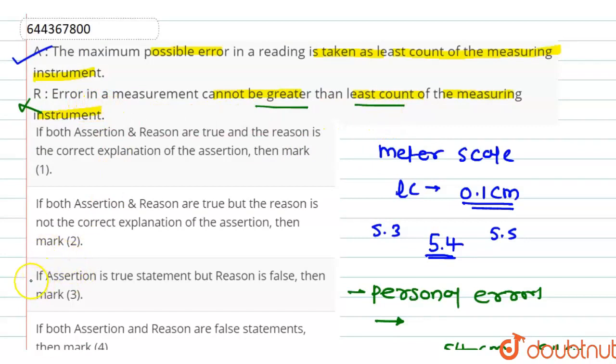The correct answer for our question is option C — that is, assertion is true, but the reason is false. Thank you.